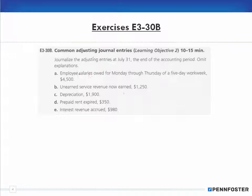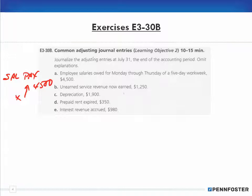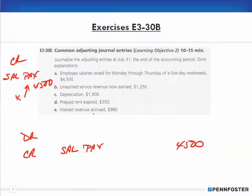If the business owes the salaries, that's a liability account — you'll see salaries payable under liabilities. If you owe $4,500 and you're making the adjusting entry, you're increasing salaries payable by $4,500. Since salaries payable is a liability and we increase liabilities on the credit side, we credit salaries payable for $4,500. Since debits must equal credits, we debit something else — salaries expense — because it's an expense to the business.